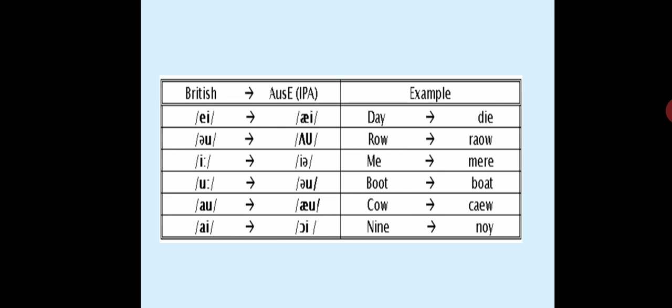Another example: 'cow' is pronounced as 'keo' — 'I'm seeing so many keos right now.' And the number 'nine' sounds like 'noi.' So if asked 'how many cows?' you'd hear 'noi keos.' That's how you're going to listen to them.